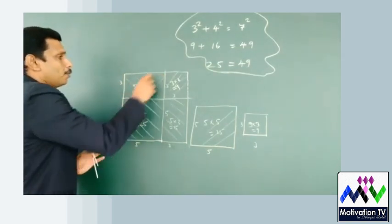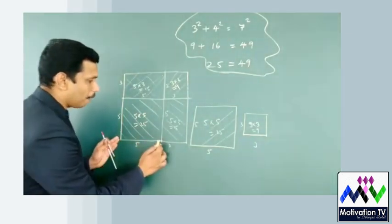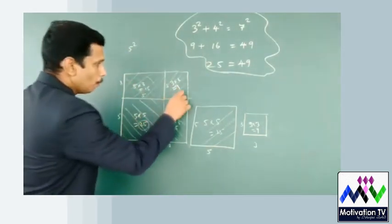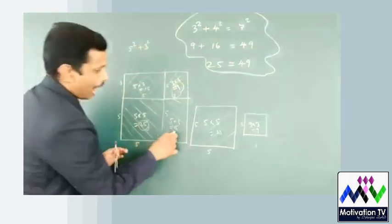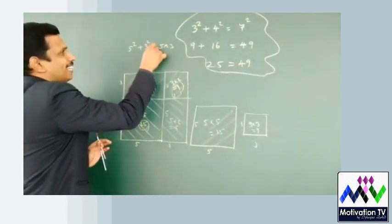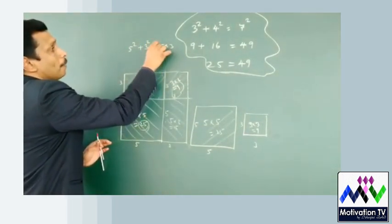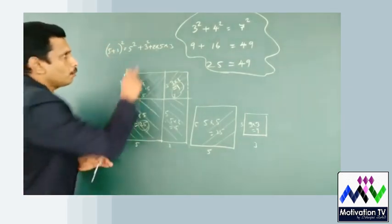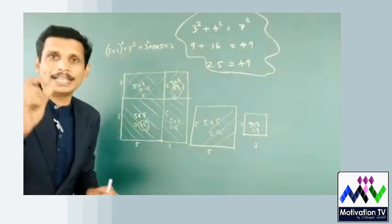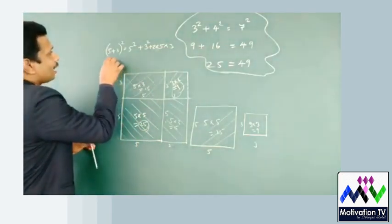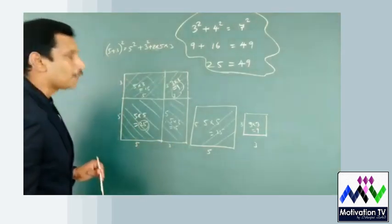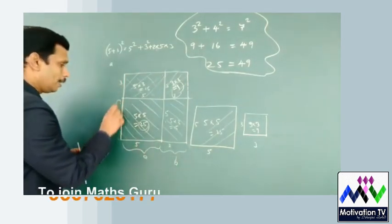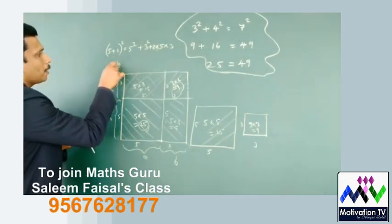So we have to get the right angle. We have to say that 5 plus 3 plus 2 squared — 5 plus 3 plus 2 squared. How is the Maths?